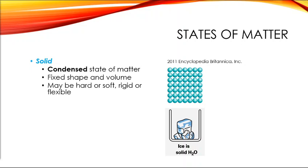The first thing we're going to talk about is a solid. As you can see from this illustration, a solid has a very arranged atom structure. We refer to these as a condensed state of matter — condensed means that every single atom inside the structure is touching every other atom next to it and surrounding it. This is what gives a solid a fixed shape and a fixed volume.